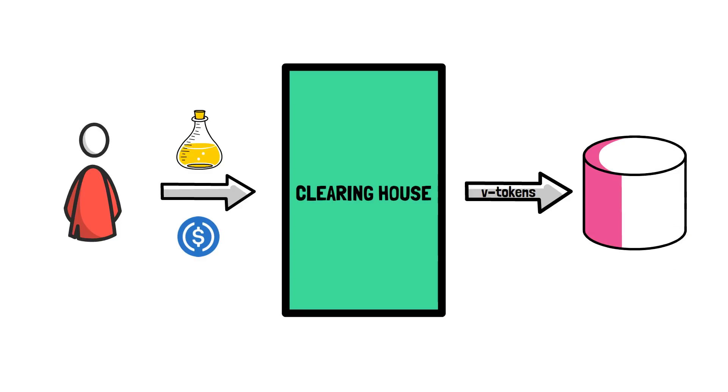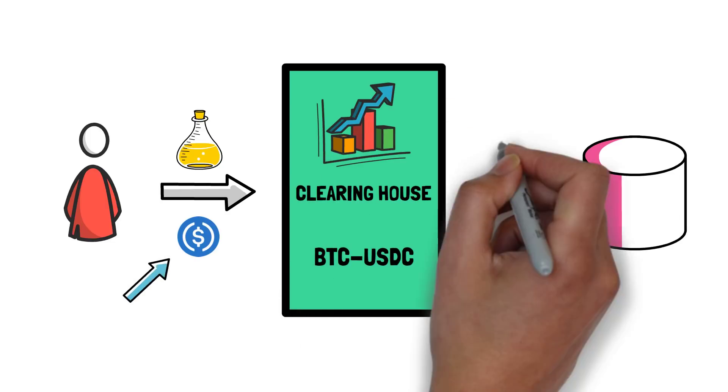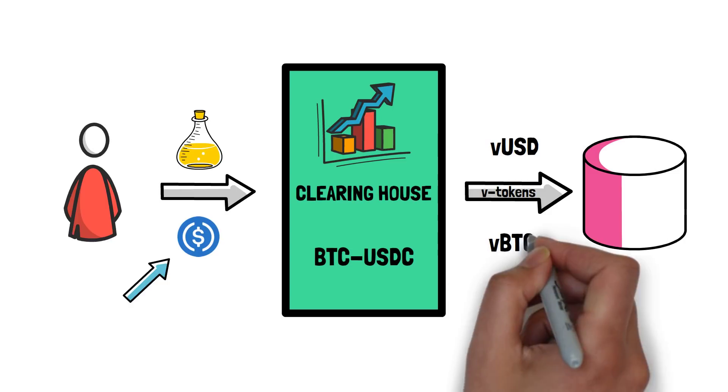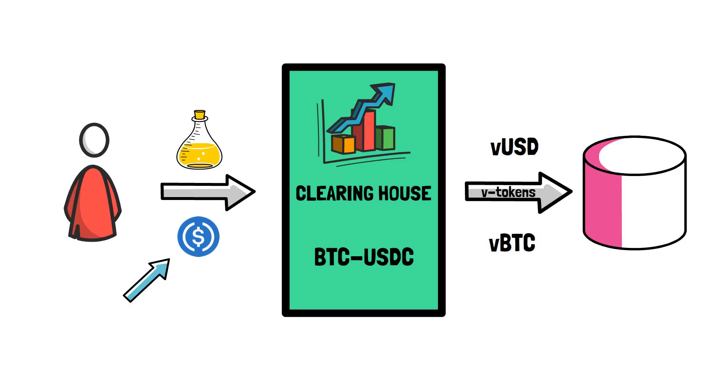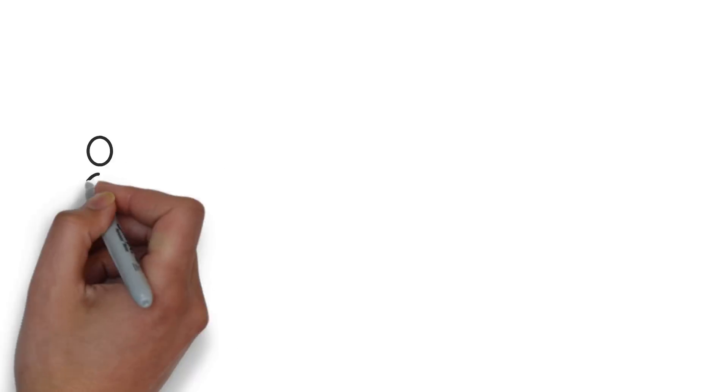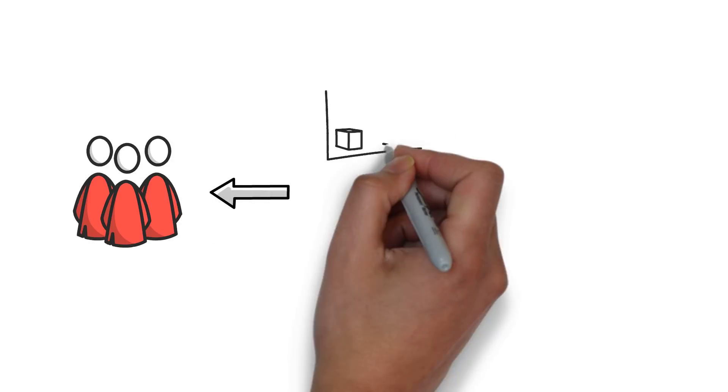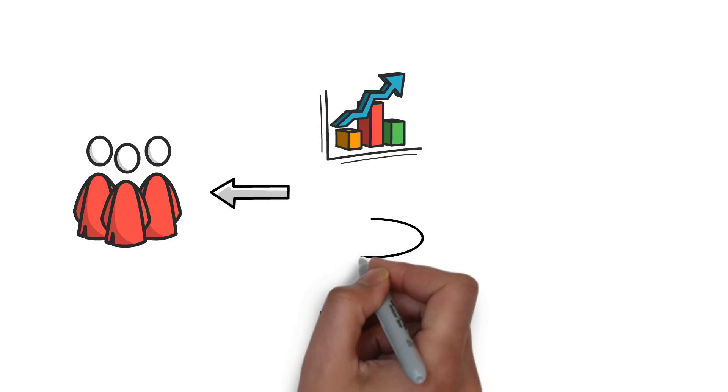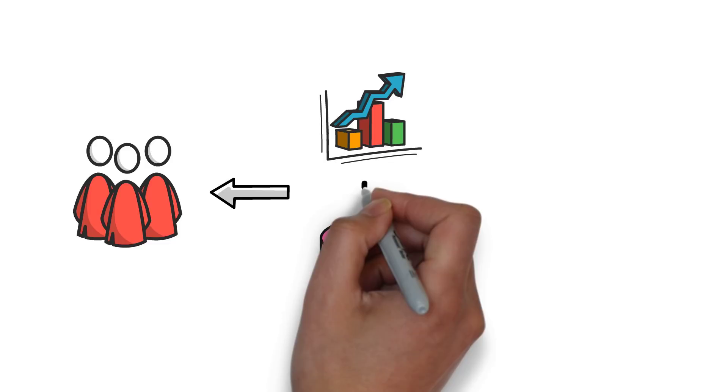As an example, if a maker decides to provide liquidity in the BTC-USDC market, their USDC is used to mint a correct ratio of VUSD and VBTC, that are in turn added to the VUSD-VBTC Uniswap V3 pool. As makers are exposed to the price of the underlying tokens in a liquidity pool, they can be impacted by impermanent loss.